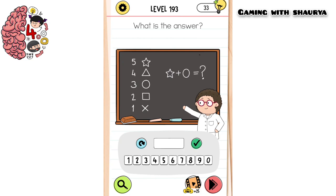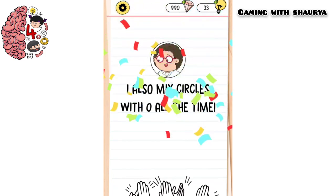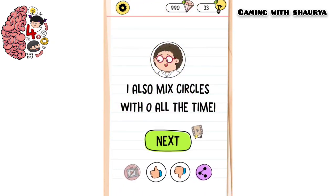Five plus zero equals five, so just enter five. Five is the right answer and with this you will easily pass this level.